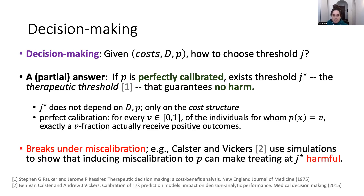Unfortunately, this is only a partial answer because it breaks down under miscalibration. This has already been shown in earlier work. For example, Castor and Vickers show through simulations that if you start with a calibrated predictor but gradually induce miscalibration, then eventually — and it happens fairly fast — you can make treating at the therapeutic threshold J* actually harmful.